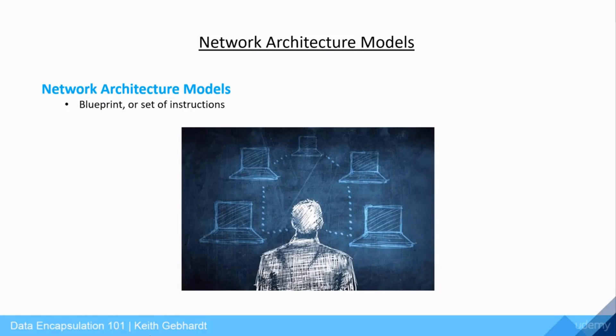Network architecture models are stacked layers which provide the devices on our networks with a blueprint or a set of instructions for communicating our data across the network successfully. The term architecture model is a loose term where you may see it written or spoken about in other ways such as network models, network architectures, OSI model, TCP/IP model, etc. All these terms are a correct way for discussing this topic.